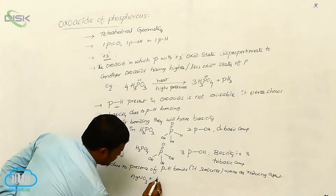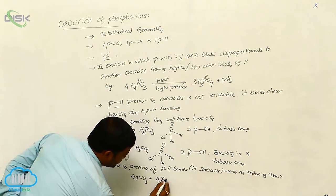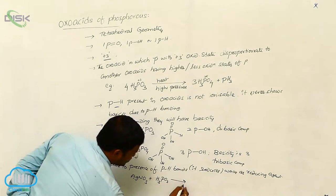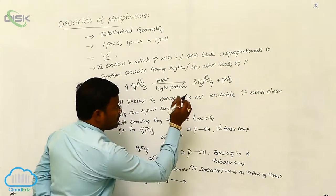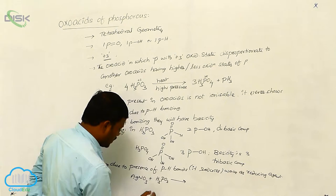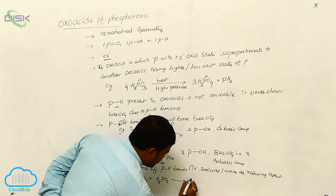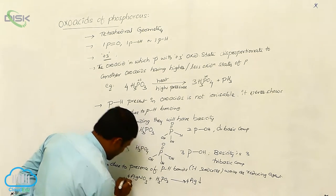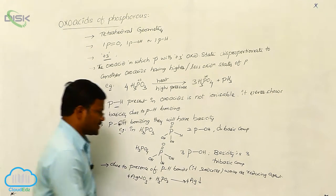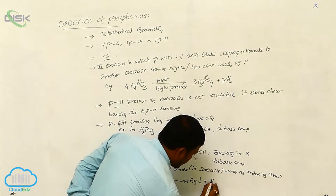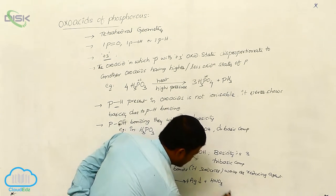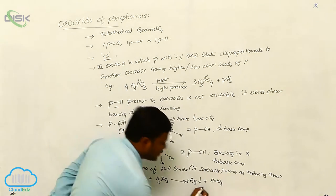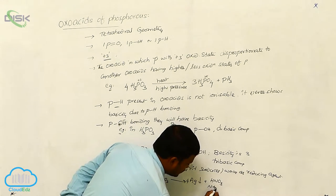For example, H3PO3 reacts with silver nitrate due to the presence of P-H bonds in H3PO3. It produces a silver precipitate plus the formation of nitric acid.